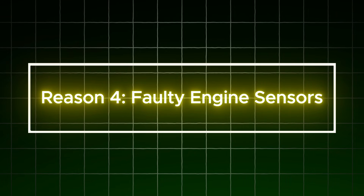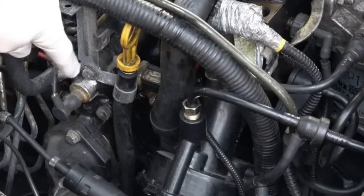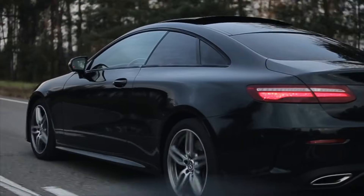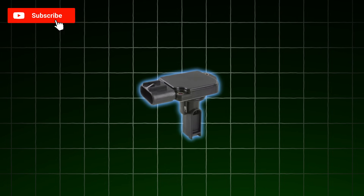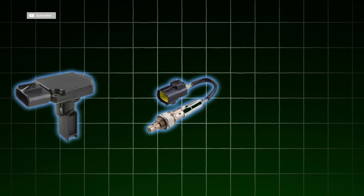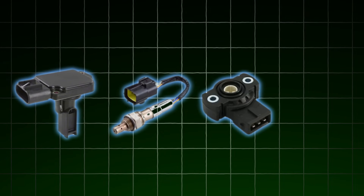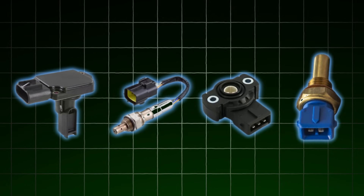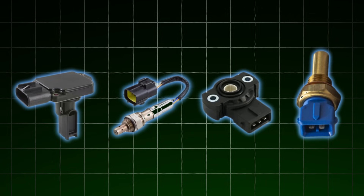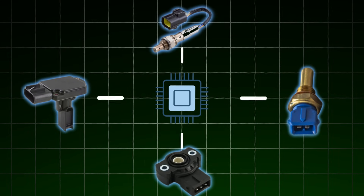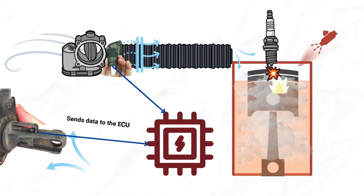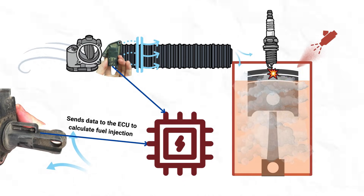Reason 4: Faulty engine sensors. Engine sensor issues are a critical factor behind unstable RPM fluctuations at idle. Modern vehicles rely on multiple sensors — such as the mass airflow (MAF), oxygen (O2) sensor, throttle position sensor, and engine coolant temperature sensor — to provide real-time data to the ECU. These sensors enable the ECU to accurately adjust fuel injection and spark timing for efficient combustion at the ideal 14.7:1 air-to-fuel ratio. However, when any of these sensors malfunction, they deliver incorrect readings.